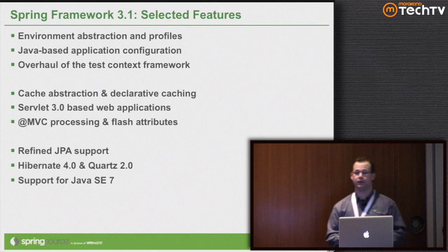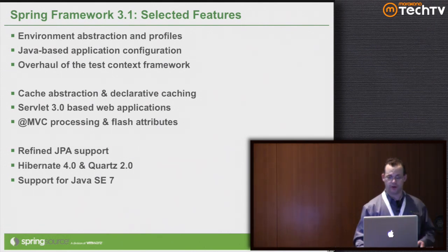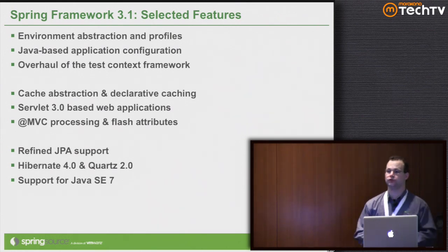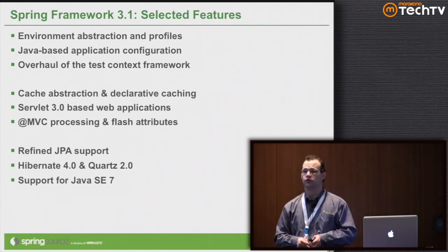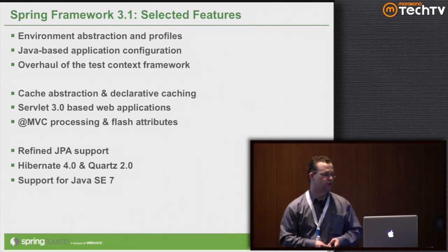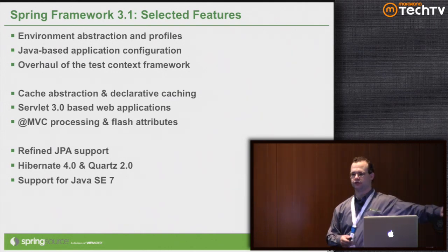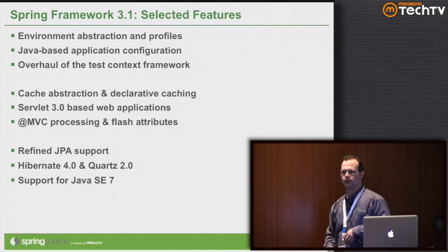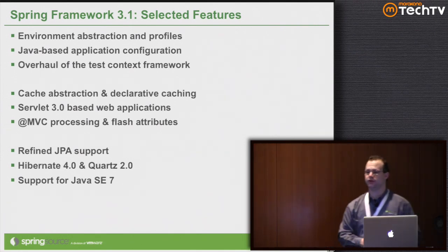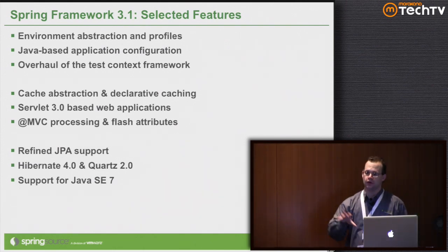There are a lot of new features: the environment abstraction and profiles; Java-based configuration, which got a major overhaul; the test framework adopted to support Java-based configuration and the environment abstraction; a cache abstraction; partial support for Servlet 3; upgrades to Spring MVC; and support for JPA, Hibernate 4, Quartz 2.0, and Java 7. Java 7 debuted last July and Spring was the first enterprise technology with support for Java 7 specific features.